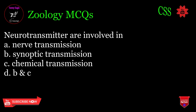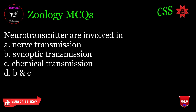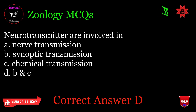Neurotransmitters are involved in: A. Nerve transmission, B. Synaptic transmission, C. Chemical transmission, D. B and C. Correct answer: D.